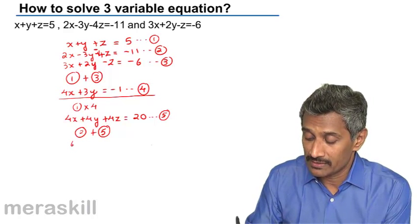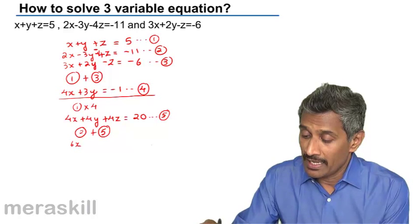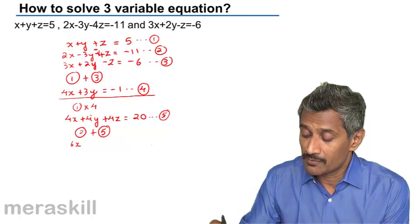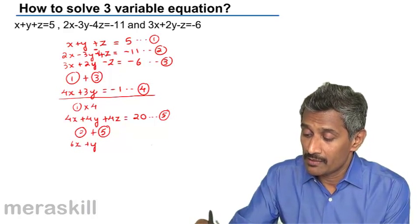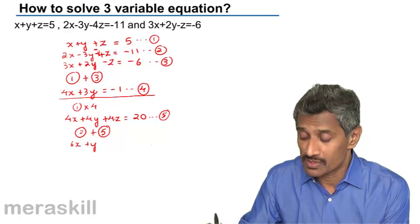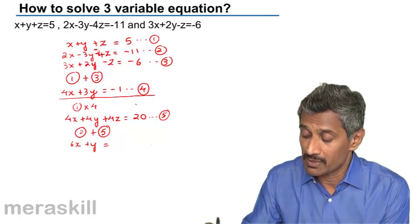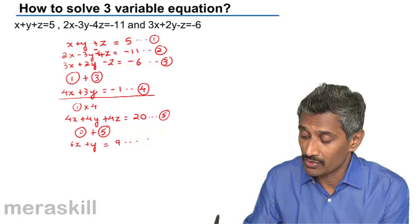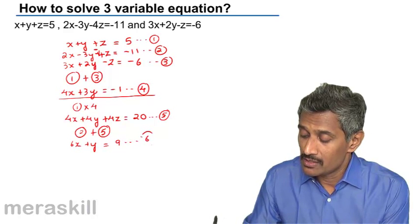If you do 2 plus 5, you get 2x plus 4x is 6x, and minus 3y plus 4y is y, minus 4z plus 4z is 0. That becomes 10 and then minus 11 plus 20 is 9, and you get equation number 6.